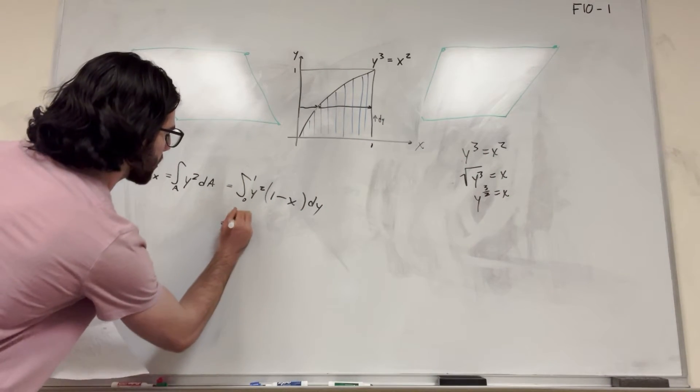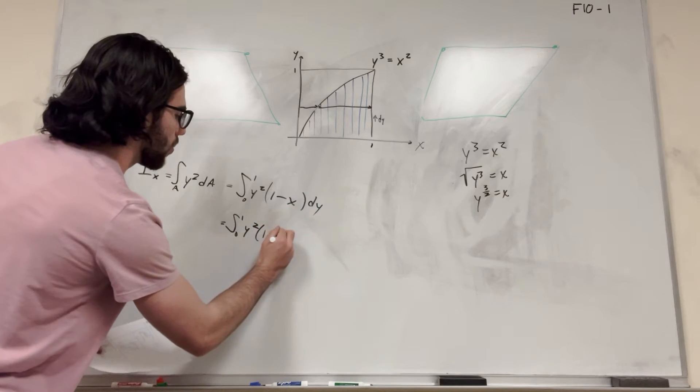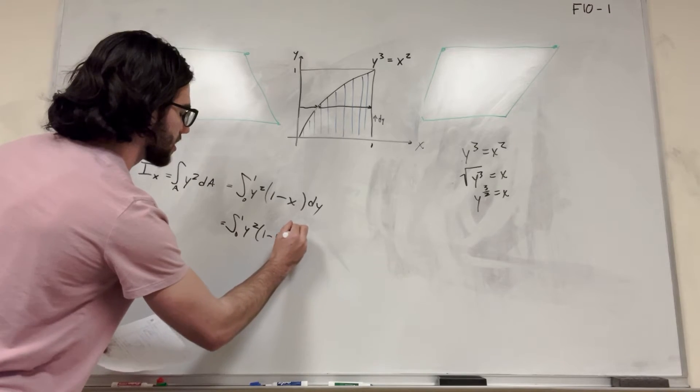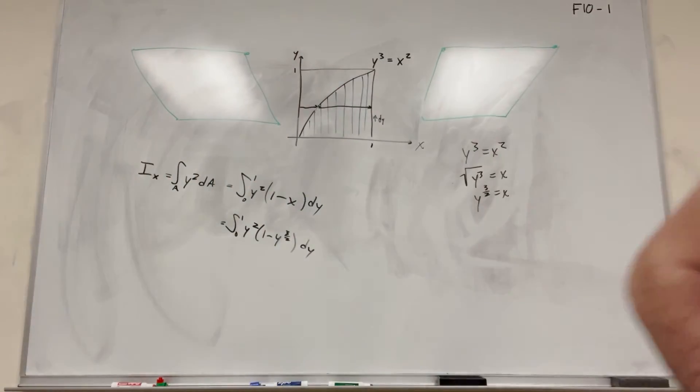So this is equal to integral from zero to one, y squared, one minus, and then x becomes y to the 3 halves dy. So now we can solve this integral. Now it's really just down to calc one.